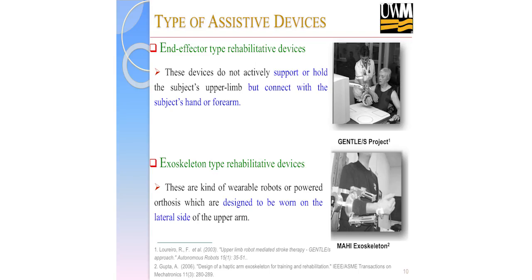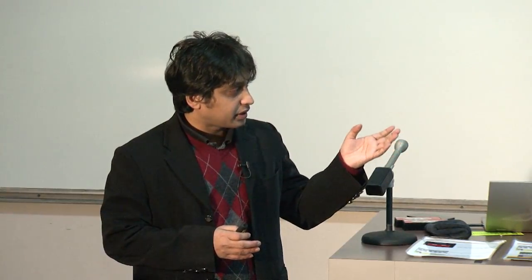I will discuss the types of rehabilitation devices for the upper limb — exoskeleton robots versus end-effector type devices. For an end-effector robot, the robot is not worn; only some part of the hand or arm is connected and it sits in front of the subject. For an exoskeleton-type robot, it is worn like a sleeve from the lateral side of the limb. Both have advantages and disadvantages.